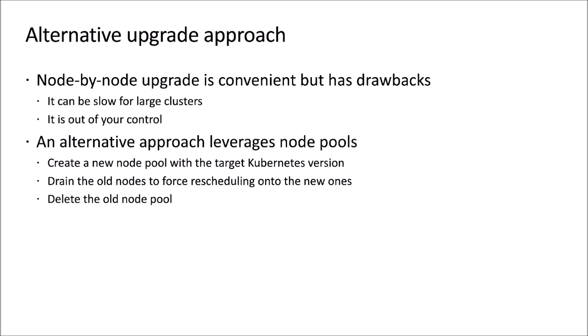Rather than running a node-by-node upgrade, customers create an entirely new node pool targeting the new Kubernetes version — for example, a new node pool targeting 1.17 — and then drain the nodes themselves on the old node pool, forcing rescheduling onto the new nodes. Once all old nodes are drained, they delete the old node pool. This effectively follows the same process as the built-in experience, but you can create all new nodes as a single operation and control the ordering and timing of draining the old ones, verifying everything is running correctly before continuing.